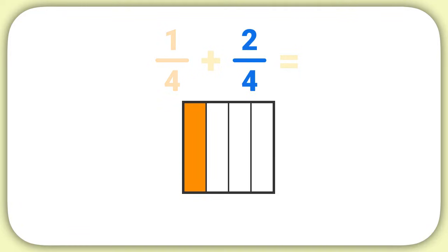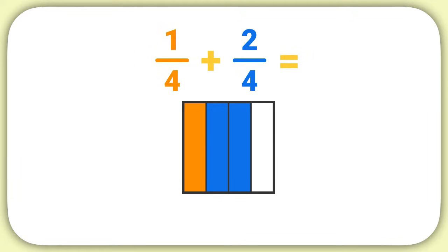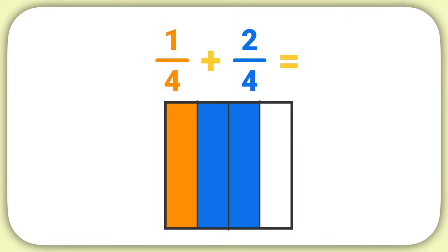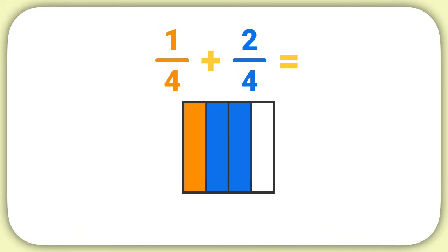Next, we need to show ourselves adding two-fourths. So I will shade in one more-fourth, two more-fourths. Now I've added two-fourths, and this model represents my answer, but I need to write it as a fraction.